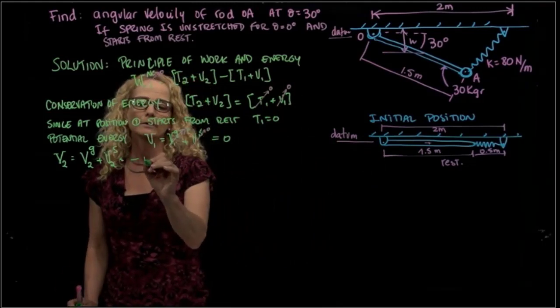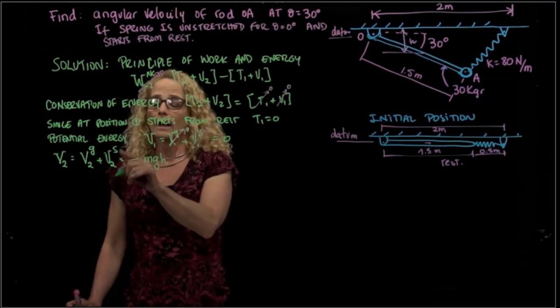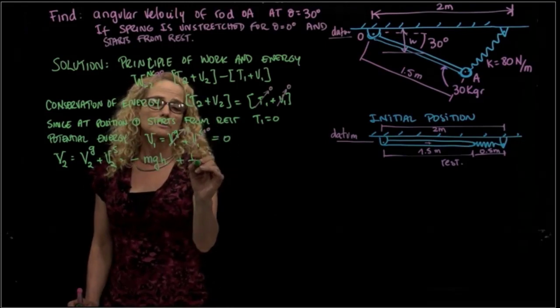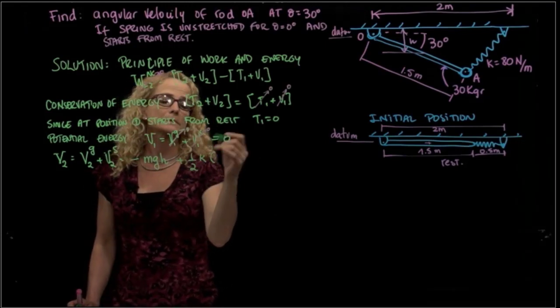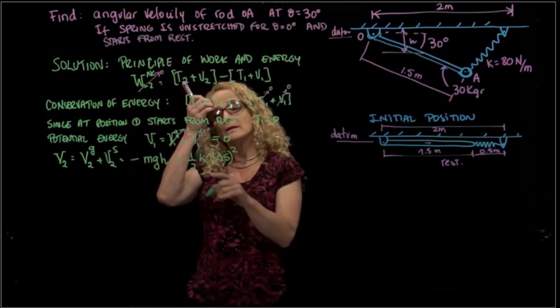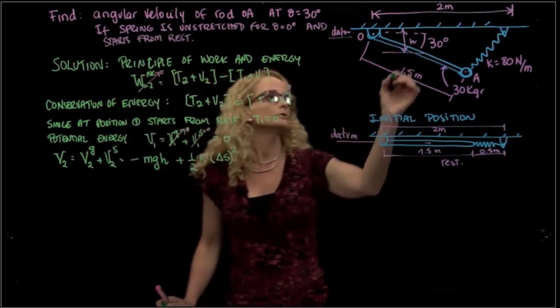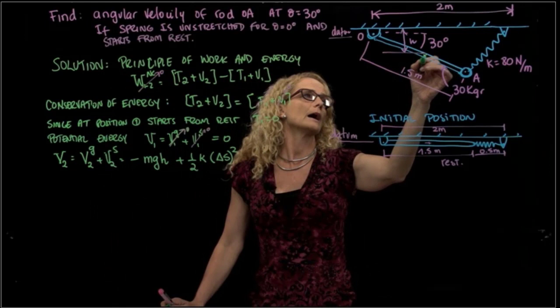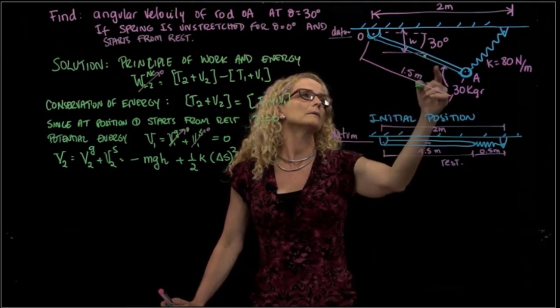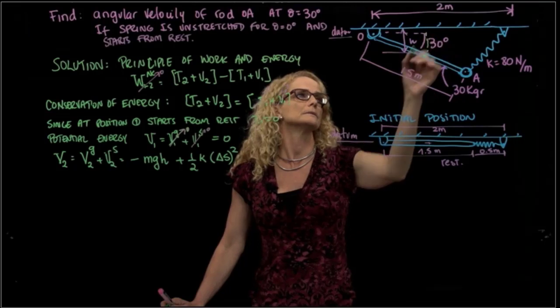And that will be negative mass times gravity times h. And the spring, as you remember, is 1/2 k times delta s squared. So how much is the h that I have dropped? h, you see here, h is half of the length of my rod times sine of 30. That will be this length here.